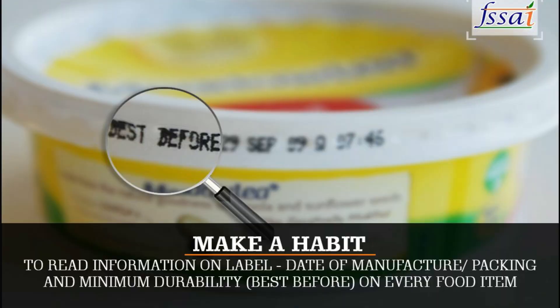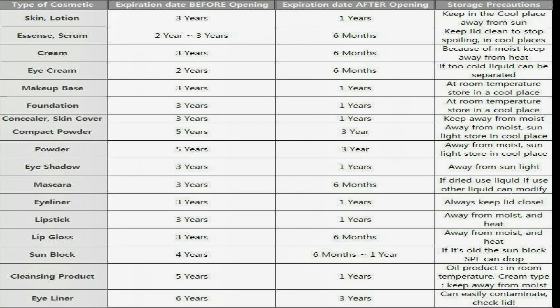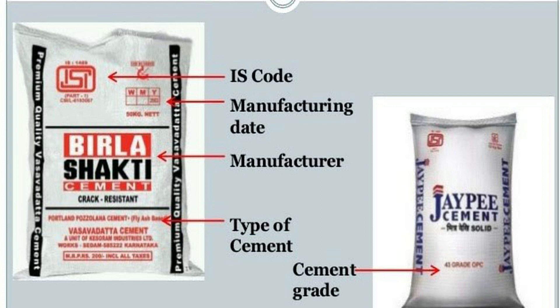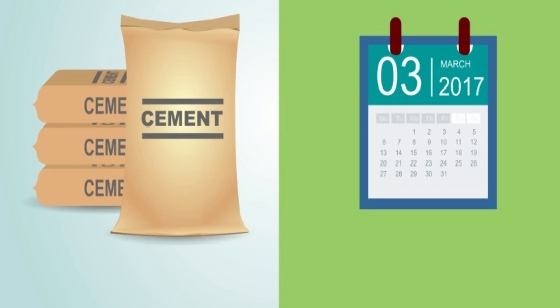First, if you have a cement bag, you can see the date of manufacturing. How do you find the validity of cement? The same thing applies to cement — we have information on the bag. The first information is the date of manufacturing. The validity of cement is about 90 days.